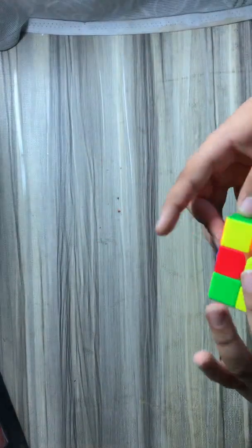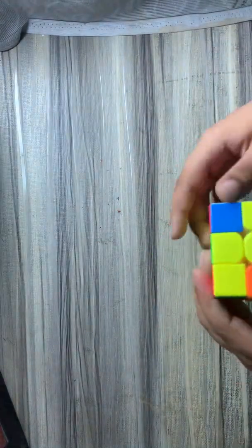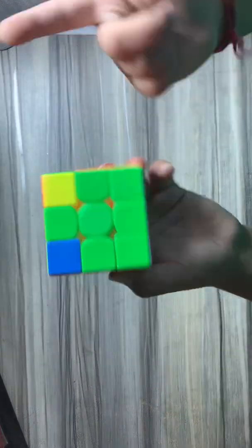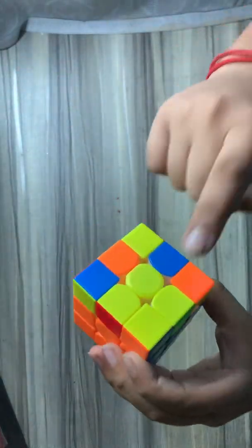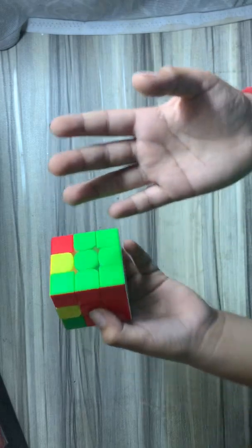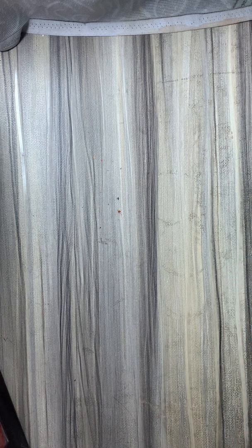Now comes the last pair. So now when you form this, I'll insert this one. And then your second layer is also solved. Now you'll use the two-look OLL or the CFOP OLL.